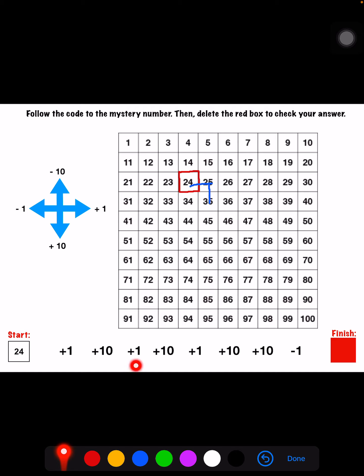My next part of the code says add one. So I'm going to go one to the right. Then it says add 10 again. So I'm going to go down one from 36. 36 plus 10 is 46. Then I'm going to add one again. 46 over to the right. 47.